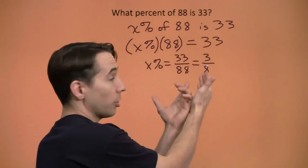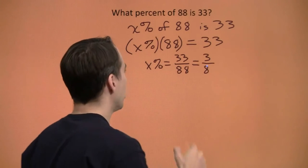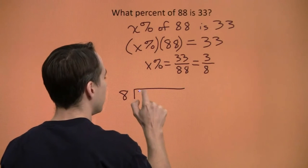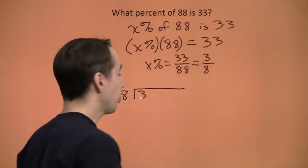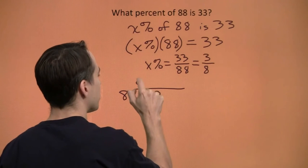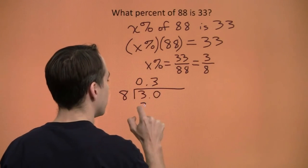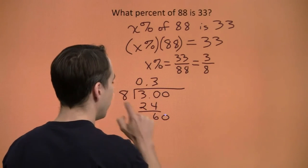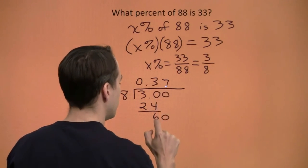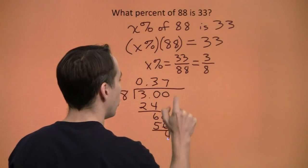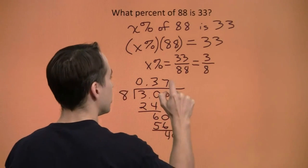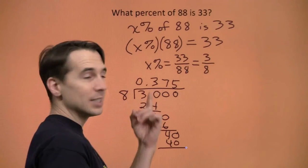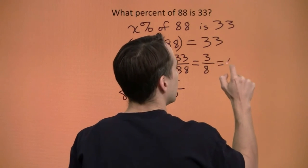One way we can do that is turn 3 eighths first into a decimal, because it's very easy to turn a decimal into a percent. I'm going to divide the 8 into the 3. The 8 doesn't go into 3, so I'm going to need some tenths. 8 goes into 3 3 times, gives us 6 left over. Bring down another 0. 8 goes into 6 7 times, leaves us 4 left over. 8 goes into 4 5 times, and we have nothing left over, so 3 eighths is 0.375.